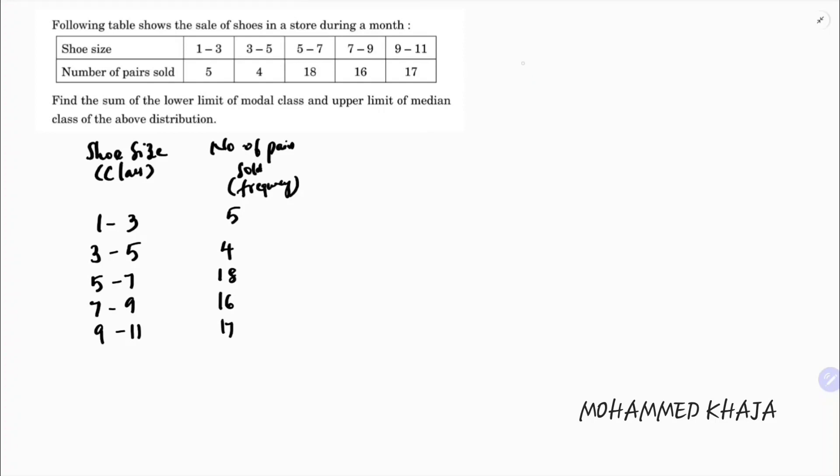Lower limit of the modal class plus upper limit of the median class - we need to calculate these two values and add them.